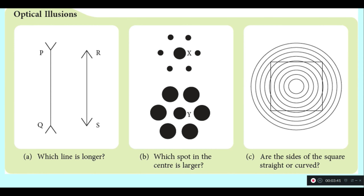These are the examples of optical illusions. Let's have a look at image A. Which line is longer — PQ or RS? It seems that line PQ is longer than line RS. This is because the two arrows at the end distract the object, and due to those distractions our brain cannot interpret the image accurately.